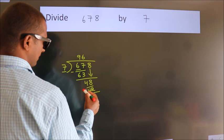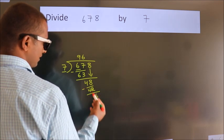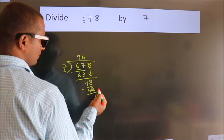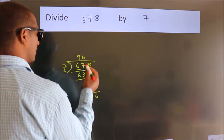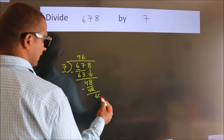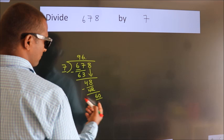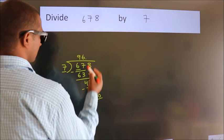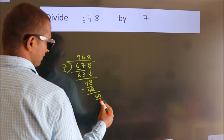Now, we subtract. We get 6. After this, no more numbers to bring it down. So what we do is, we put dot, take 0. So 60. A number close to 60 in the 7 table is 7 eights, 56.